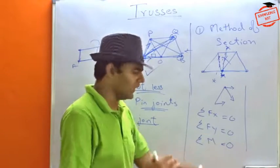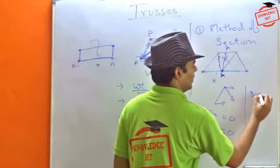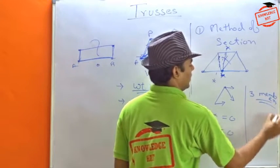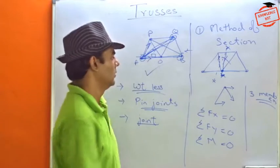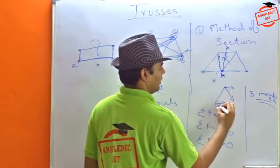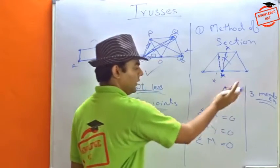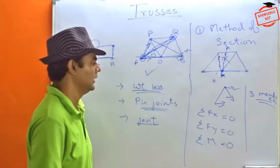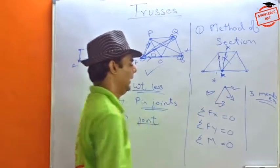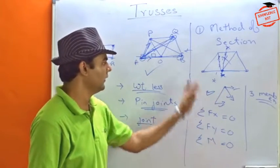We need to cut only the members. And conventionally, we just cut three members. So in this case also, we took section here. So we got these are the three members which are cut, and we get this system in equilibrium, and we apply our conditions, and we can solve this problem.